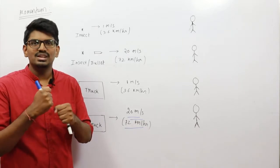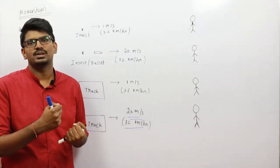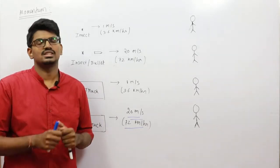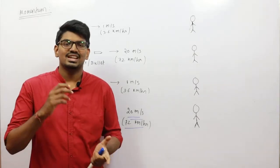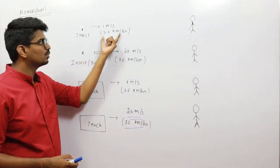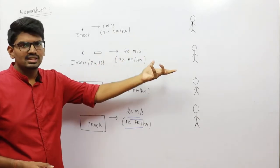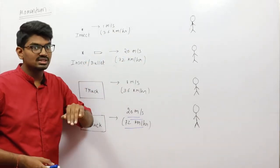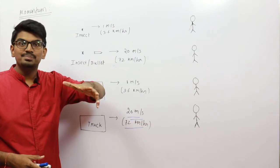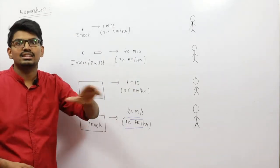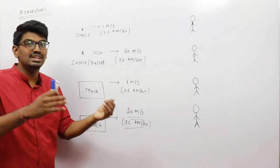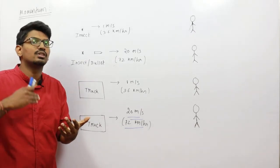The thing I want to say here is: momentum is the combined effect of mass and velocity. We cannot define momentum perfectly — there is no proper definition — but I can describe momentum as inertia in action, or inertia in motion. When mass was less and velocity was less, the effect was very small. When mass was less but velocity was high, the effect was very high.